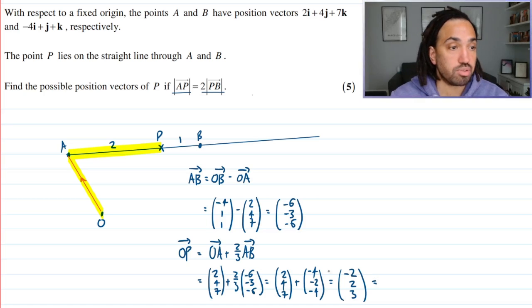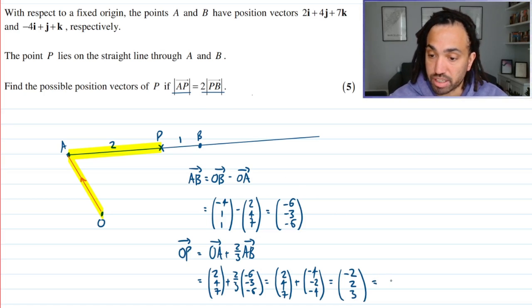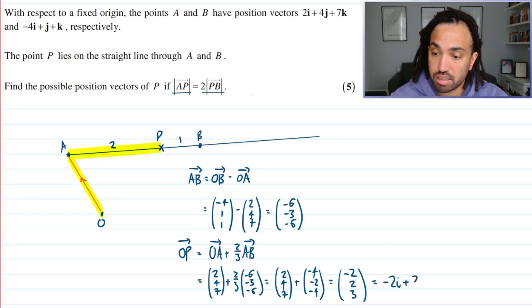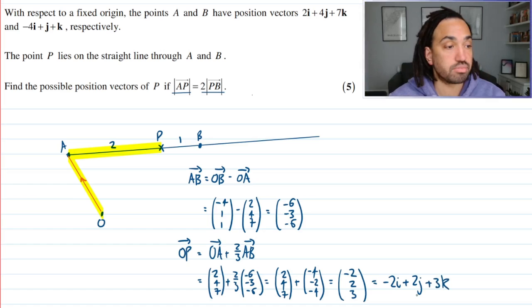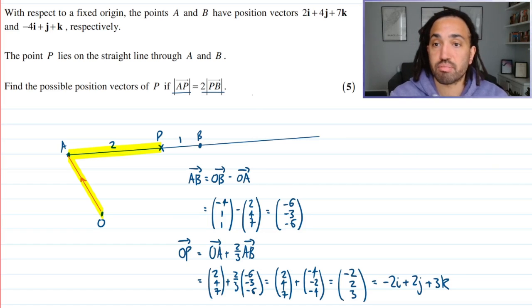But I must write it in the same form that the question gives the vectors in. So I must write it as minus 2i plus 2j plus 3k. Like that. Perfect. Okay.